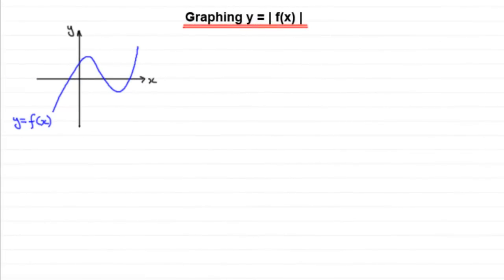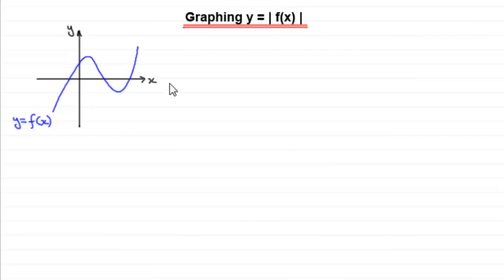In this tutorial I want to show you how we can go about graphing y equals the mod of f(x), where y equals f(x) is any graph. The mod function means that any negative value becomes a positive value, and all positive values stay positive. So when drawing graphs of y equals the mod of f(x), parts of the graph that are below the x-axis — where y would normally be negative — become positive under the mod function.